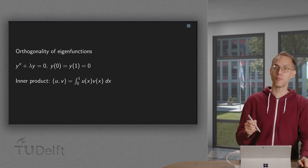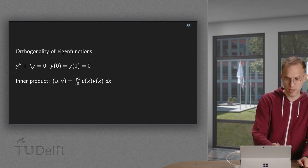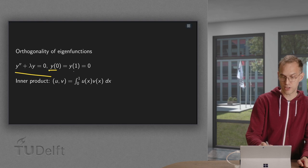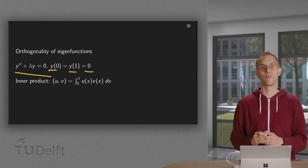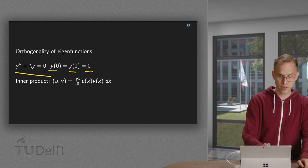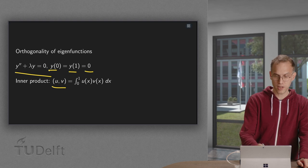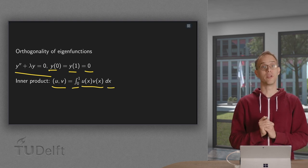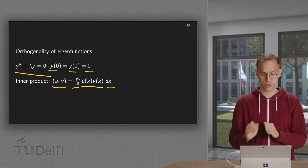Take for example the following boundary value problem. We have y double prime plus lambda y equals zero, and at zero and one our y equals zero. Then we use the following inner product: if we have two functions u and v, we define the inner product as their product integrated from zero to one with respect to x.